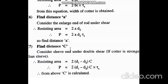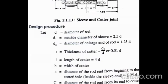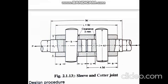Finally, find distance c — considering failure of the sleeve in double shear. Area = 2 × (d1 minus d2) × c. Using P = area × tau, with d1 and d2 known, you find c. This completes the seven-step design procedure for the sleeve and cotter joint.